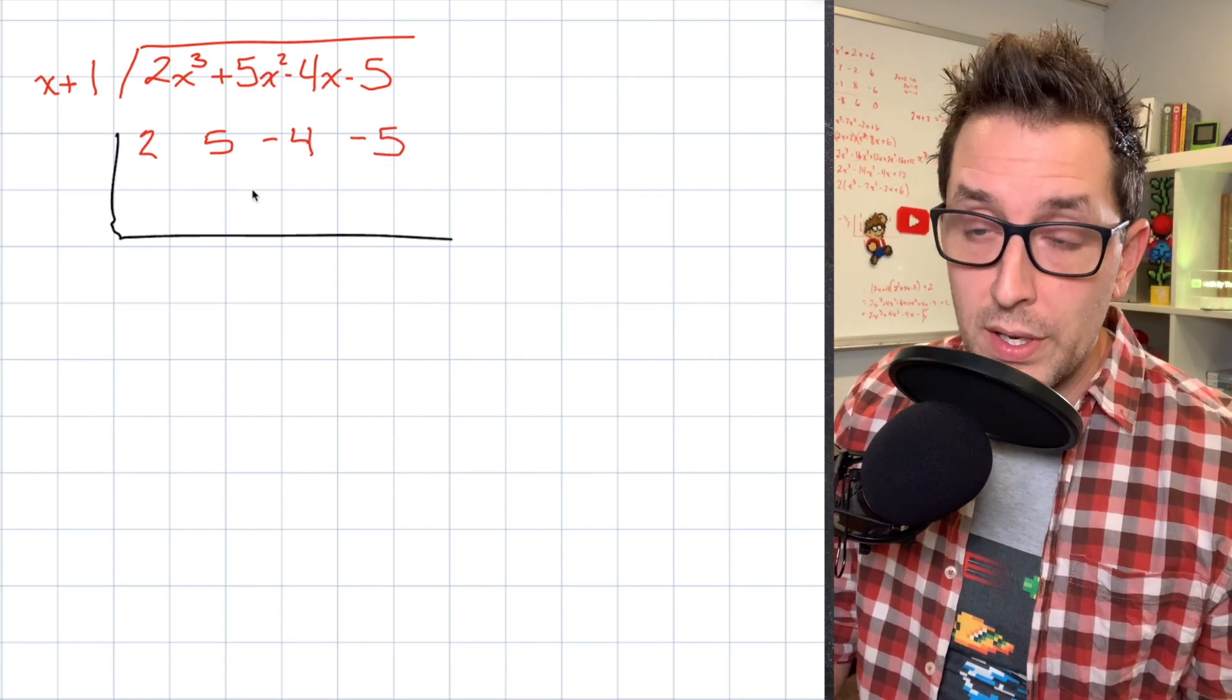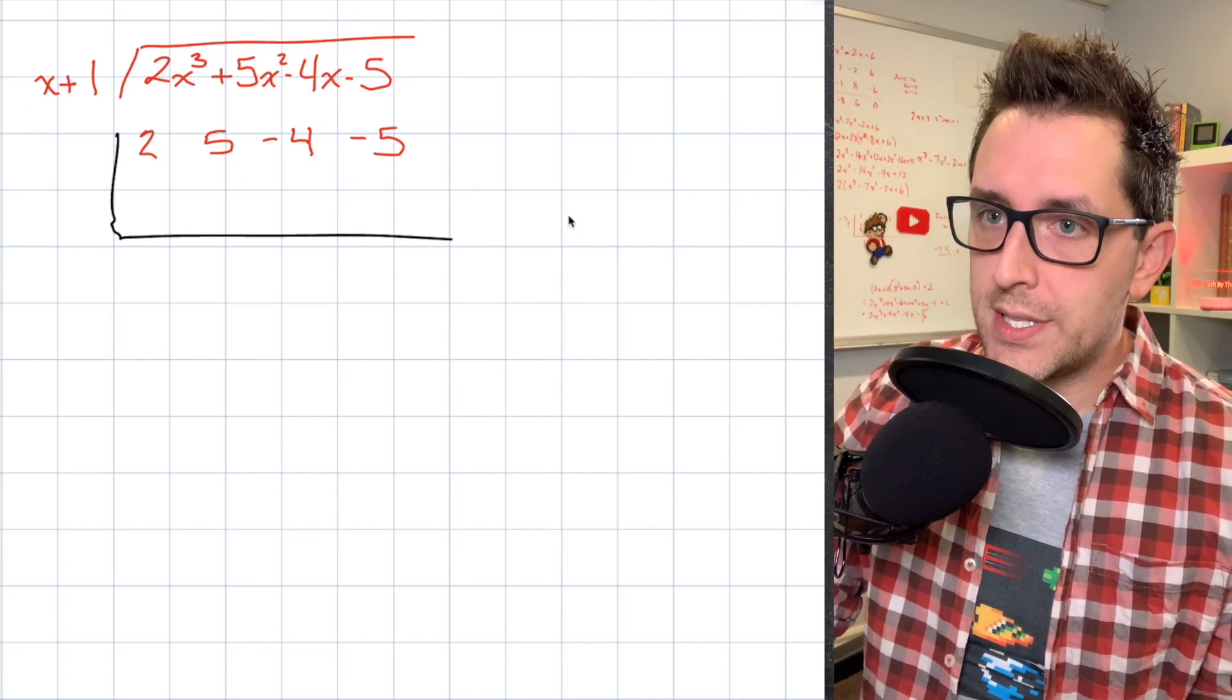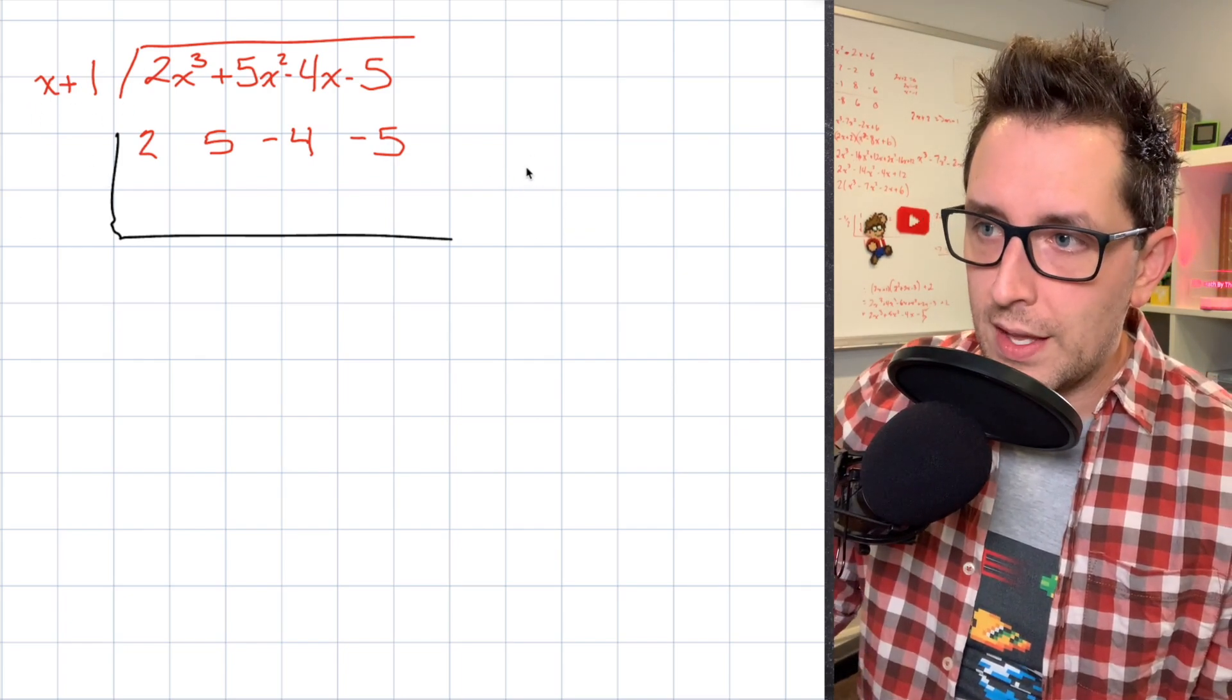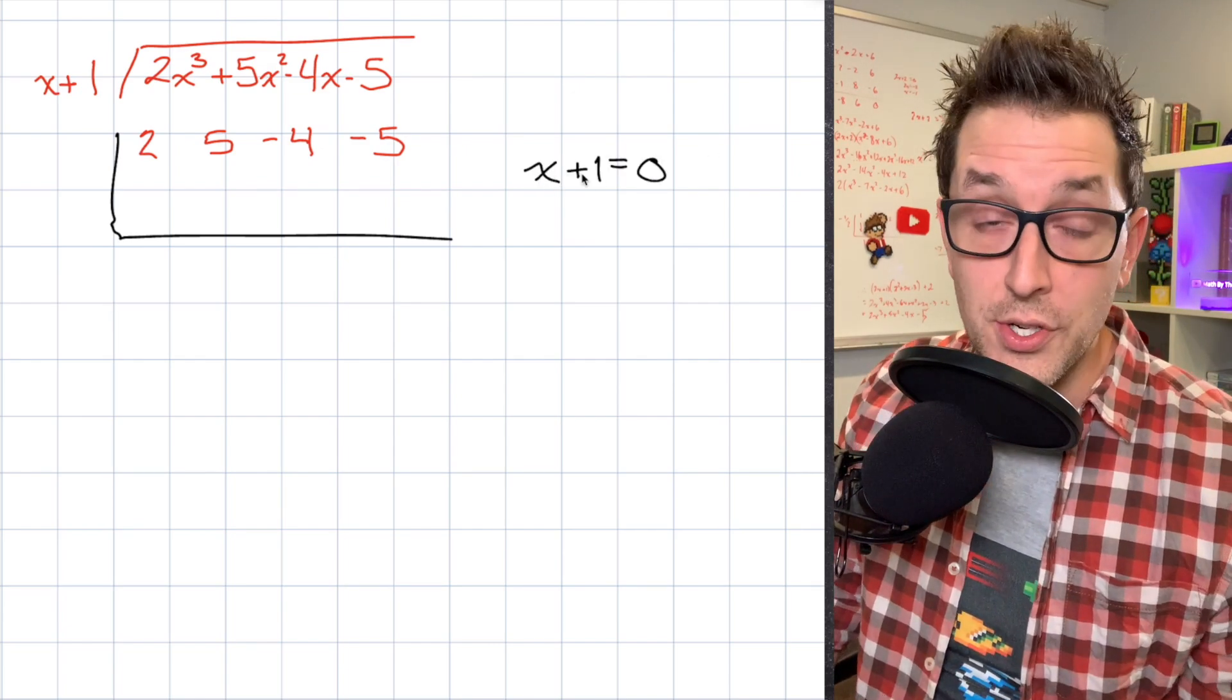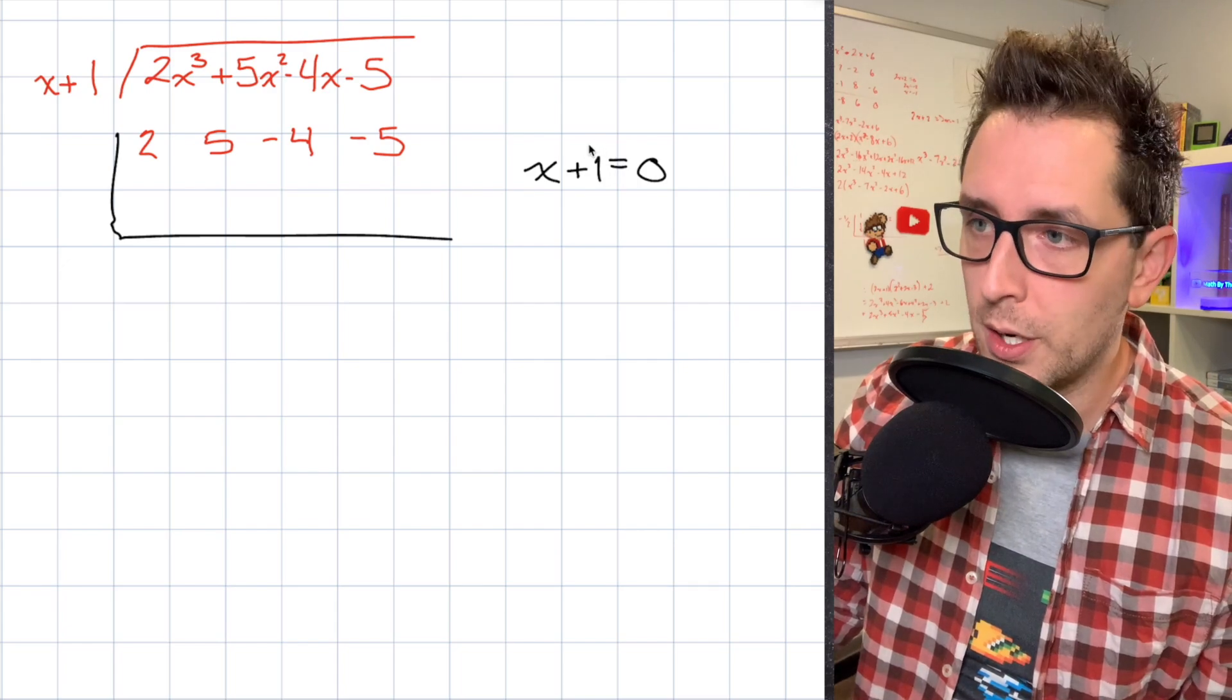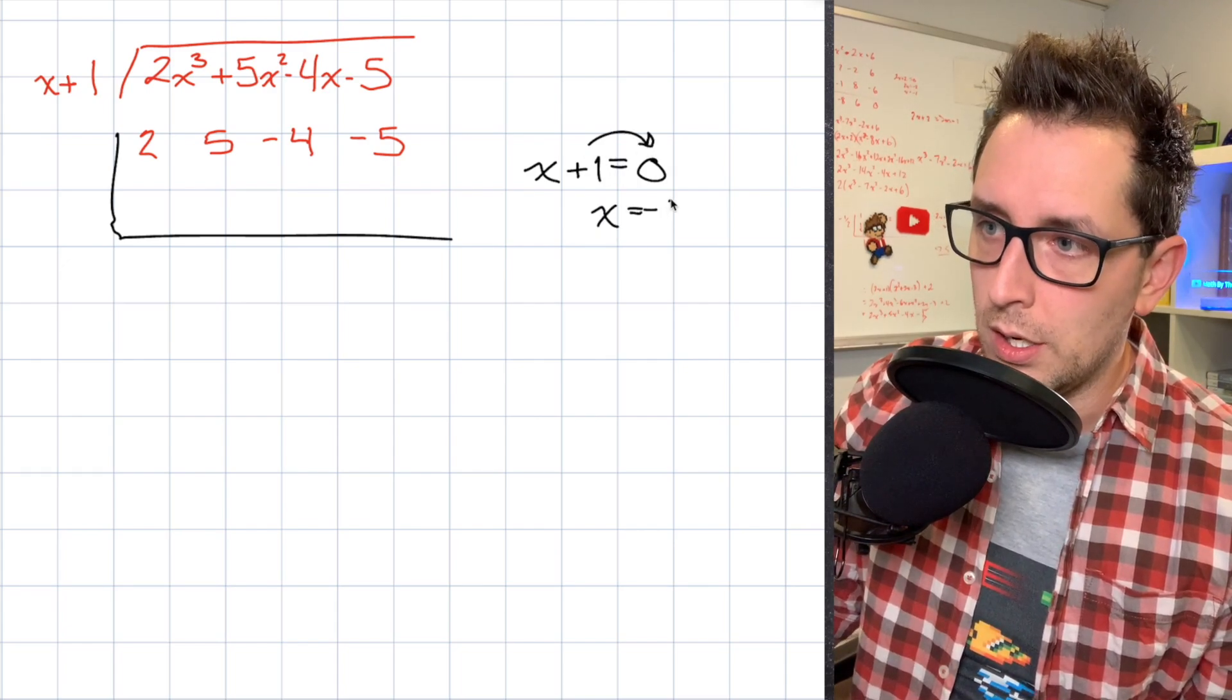Now the second piece of information we need is going to come from our divisor. And specifically, what we want to do is take that divisor, and we want to set that divisor equal to zero. And we want to find the x value that makes that divisor equal to zero. Okay, so just applying some simple algebra here, I'm going to bring that one over to the other side. And I'm going to find that x is equal to negative 1.